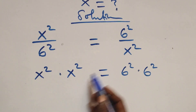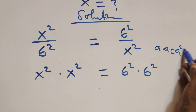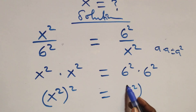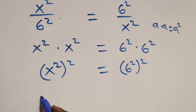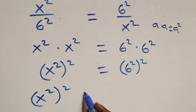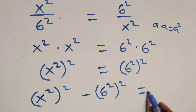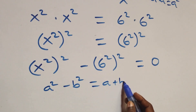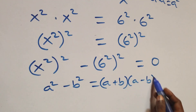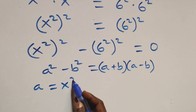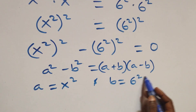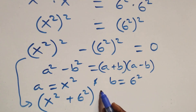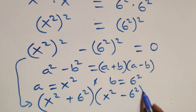When we multiply a times a, that's the same as a². So here we have x² to the power of 2 equals c² to the power of 2. Taking the right-hand side to the left gives x⁴ minus 6⁴ equals zero. This follows the identity a² minus b² equals (a + b)(a − b), where a stands as x² and b stands as 6². This becomes (x² + 6²)(x² − 6²) equals zero.